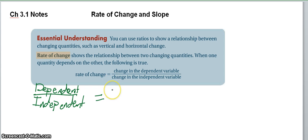We are going to dive into chapter 3 talking about rate of change and slope. So what you can see here is that rate of change shows the relationship between two changing quantities. One quantity depends on the other. So our rate of change always has the dependent on top and the independent variable on bottom.